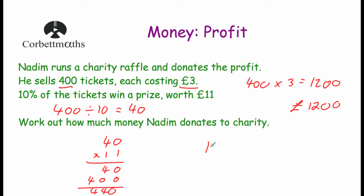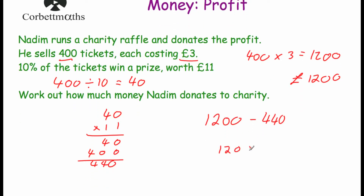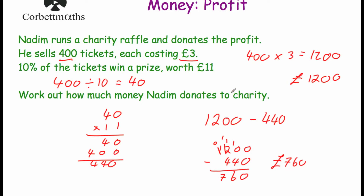So if we take our £1,200 and subtract £440, we will work out how much profit Nadeem has made. Let's do that: 0 take away 0 is 0. We're going to need to borrow — cross out the 2, call that a 1 and a 10. 10 take away 4 is 6. 1 take away 4 — again we need to borrow — so 11 take away 4 is 7. That means he makes £760. So his profit is £760 and he donates all of that to charity.